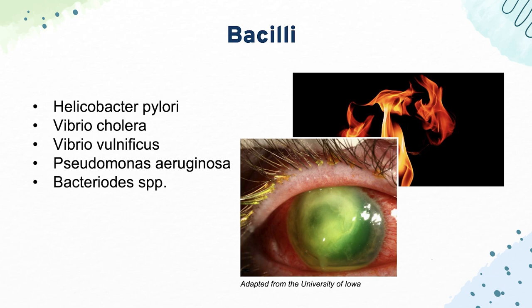Next, we have Vibrio vulnificus, which causes gastroenteritis from seafood, often in iron-deficient patients — very high yield. Next, we have Pseudomonas species, which typically produces a grape-like odor and causes infections in patients with diabetes or burns. It's also notably a cause of chronic pneumonia in adults with cystic fibrosis.